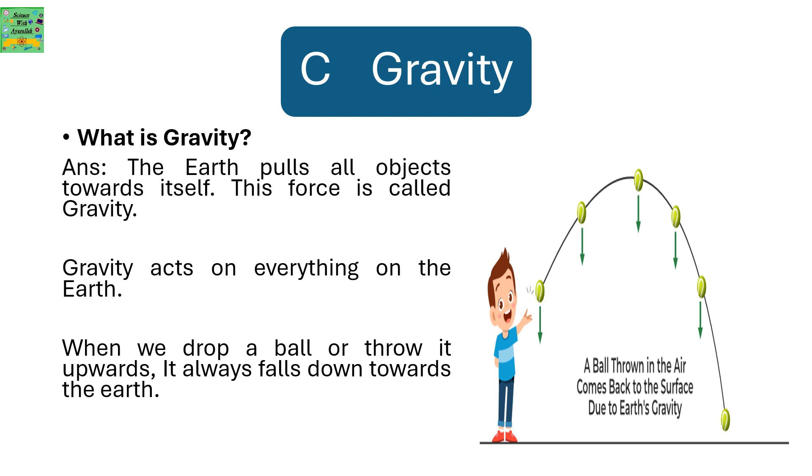The third part is gravity. What is gravity? The earth pulls all objects towards itself. This force is called the gravitational force or gravity. Gravity acts on everything on the earth. When we drop a ball or throw it upwards, it always falls down towards the earth.